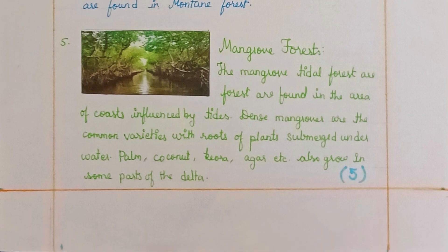Mangrove Forests: The mangrove tidal forests are found in coastal areas influenced by tides. Dense mangroves are the common variety, with roots of plants submerged under water. Palm, coconut, Sundari, and Agar also grow in some parts of the delta.